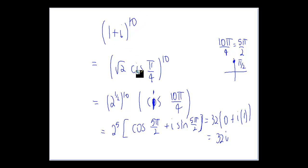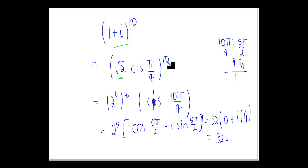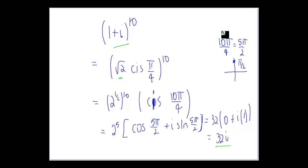For example, (1 + i)^10: using a binomial expansion gives 11 terms, which is quite nasty. Instead, convert to modulus-argument form — modulus √2, argument π/4 — then apply De Moivre's Theorem: (√2)^10 = 2^5 = 32, and 10 × π/4 = 5π/2. Then cos(5π/2) = 0 and sin(5π/2) = 1, so the answer is 32i. You can expand it fully and collect terms to verify the same result.